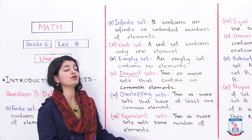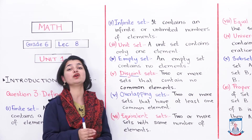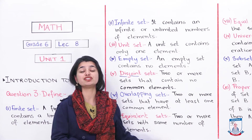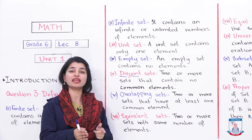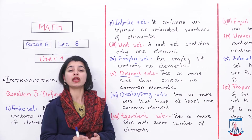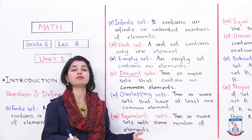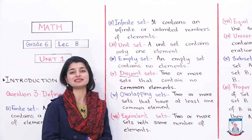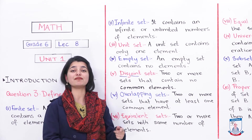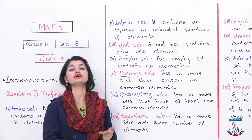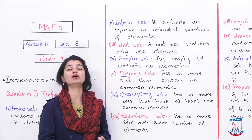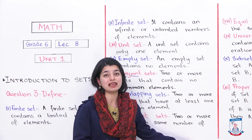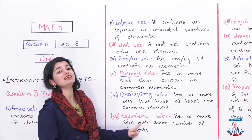After that, we are defining equivalent sets. It is important to note that equivalent sets and equal sets are very different — they are two different terms. Equivalent sets are sets that have the same number of elements. The number of elements in one set equals the number of elements in the other set — not the same elements, but the same count. Such sets are called equivalent sets.